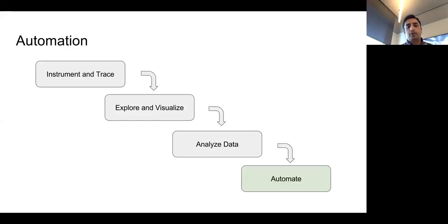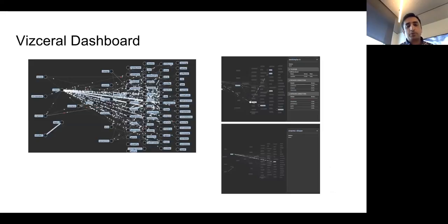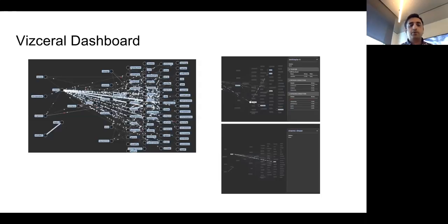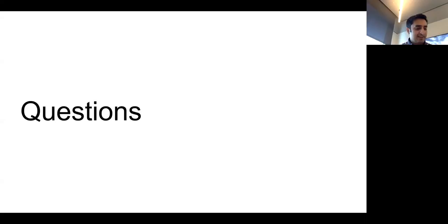We're also working on a Visceral dashboard — similar to Netflix's Vizceral tool — which lets you view the real-time state of your services. We're using it to display a real-time view of our trace data and the output of analysis tools, so if a service has errors or a latency spike, you can clearly see where it's coming from and identify the root cause.